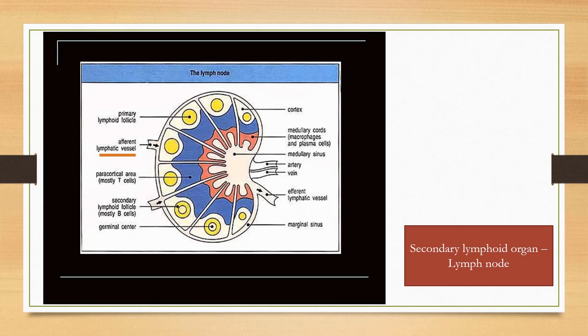Several afferent lymphatic vessels carry lymph to the lymph node and a single efferent lymphatic vessel carries lymph away from the lymph node. Lymph node is surrounded by capsule. It has three regions: outer cortex, middle paracortex, and inner medullary region.